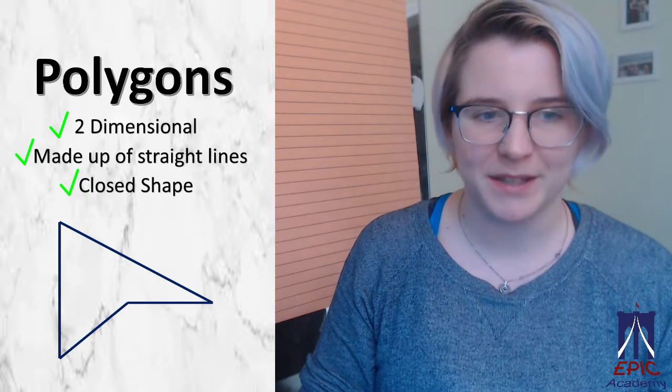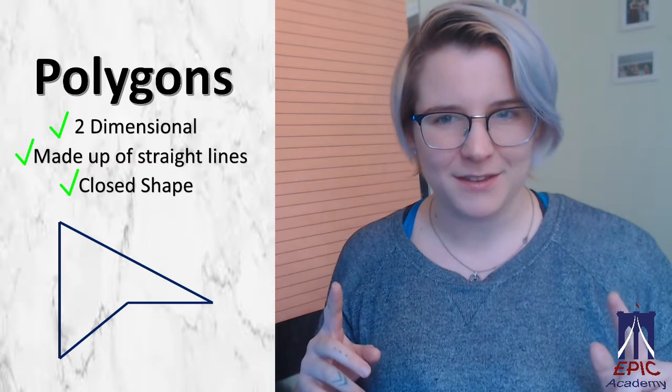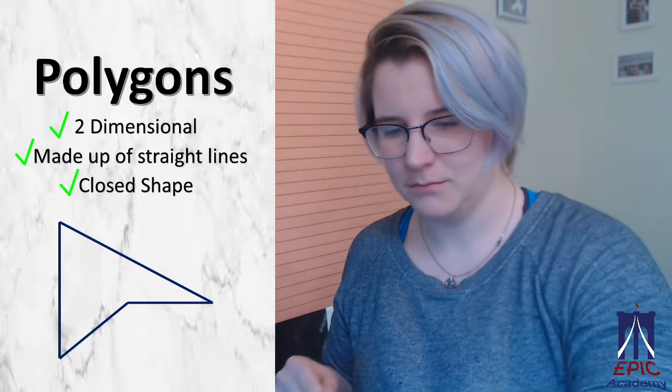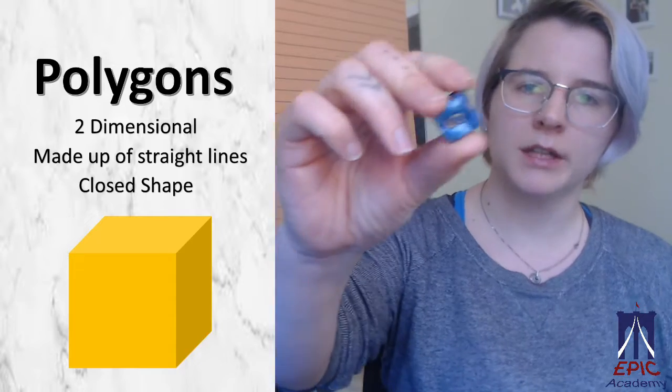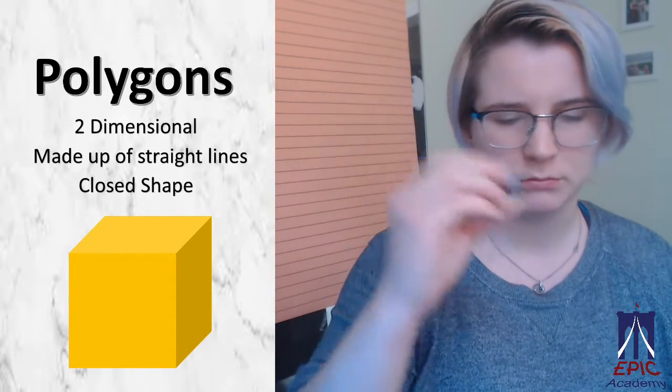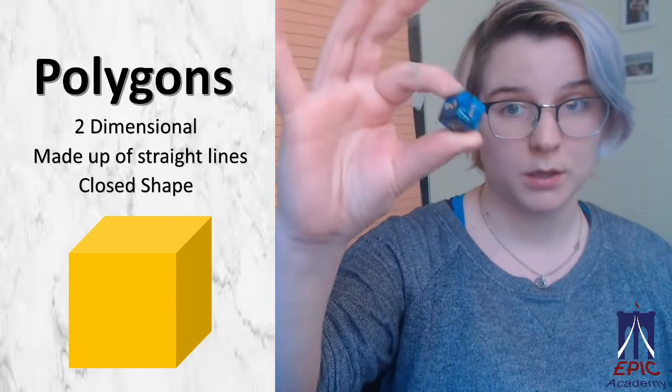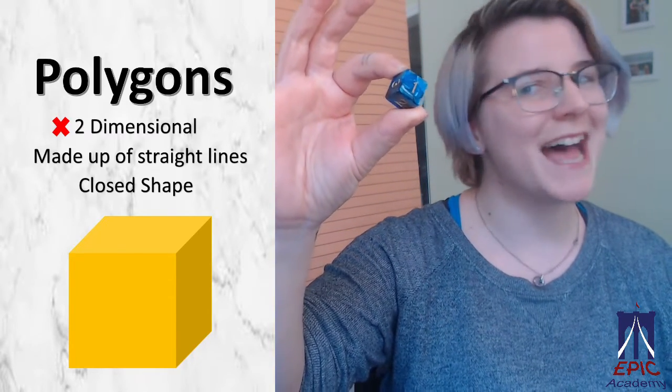So let's take a look at some examples and decide whether or not it is a polygon. I have here a cube. Is a cube a polygon? Let's go through our checklist. We know polygons are two-dimensional. This cube is three-dimensional. Not a polygon.